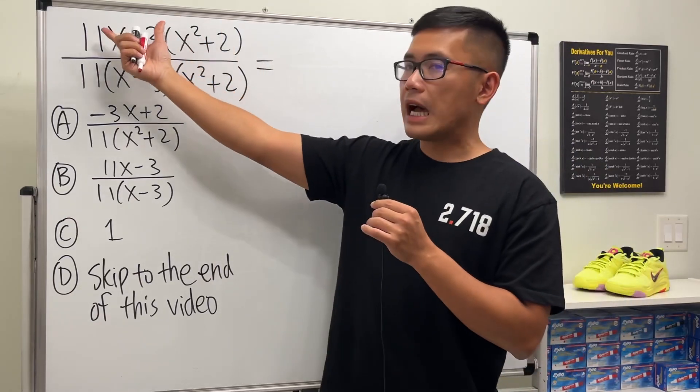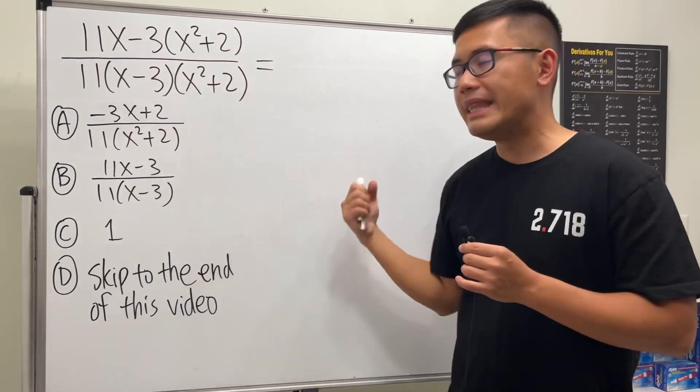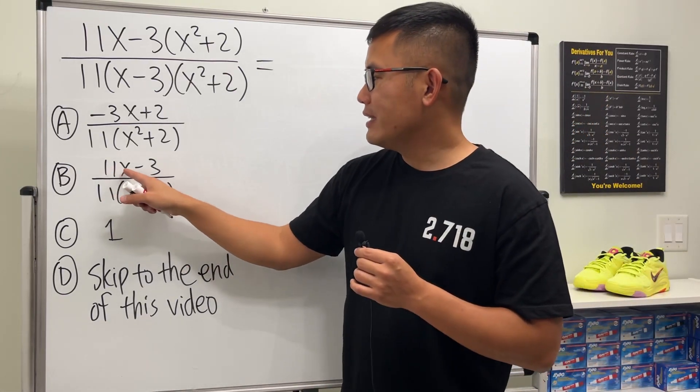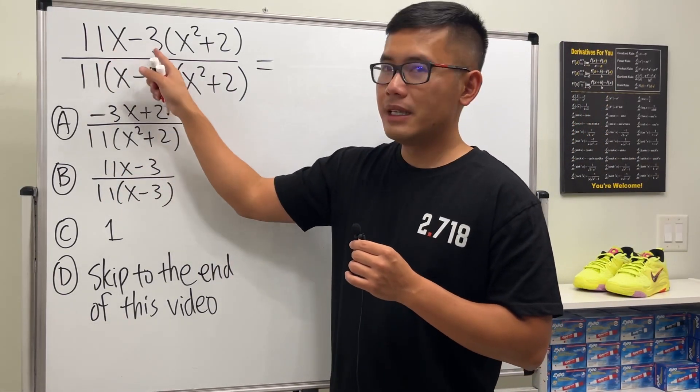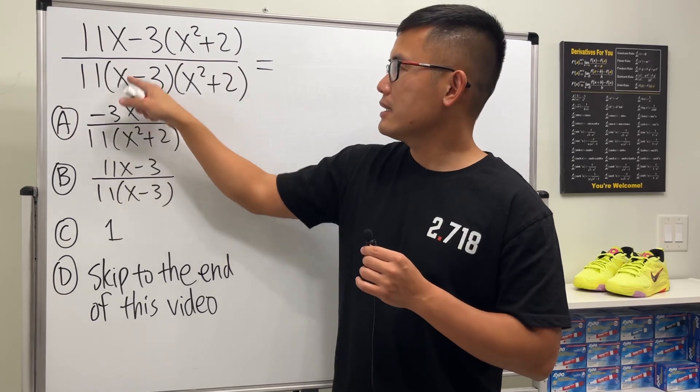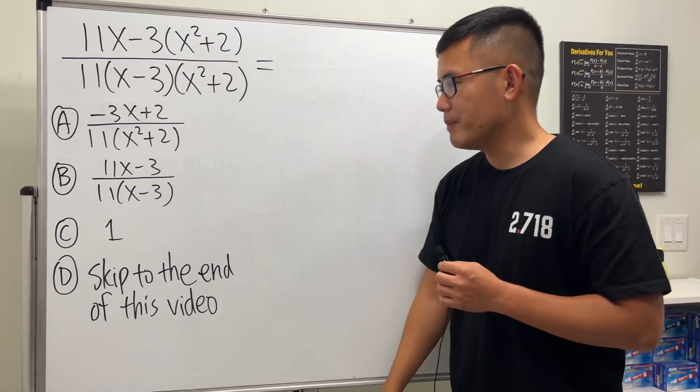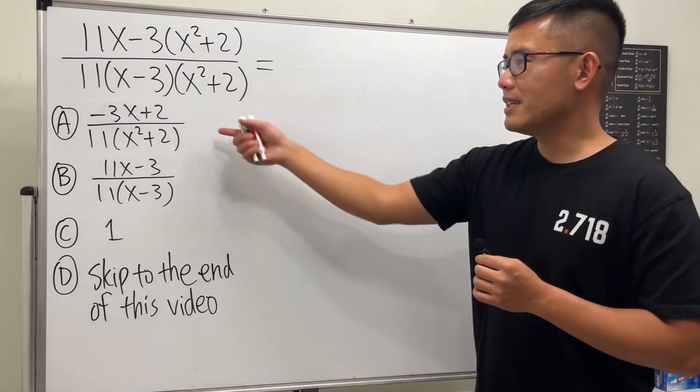Because we must simplify the top, factor it completely, and then do the cancellation right. Worse yet, we have the 11x - 3 right, and also the 11x and also the -3, they may just even cancel them and say C. No, don't do that. And with that being said, the answer is A for sure.